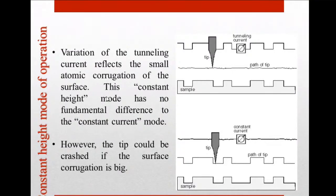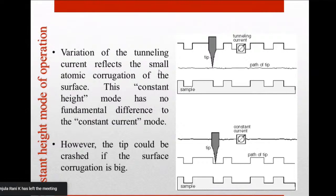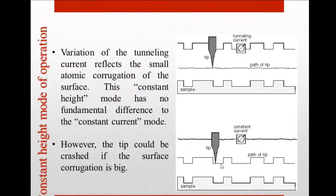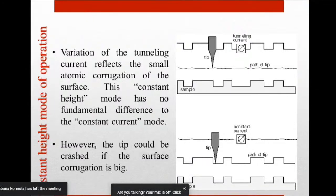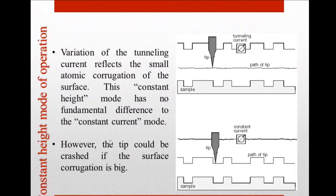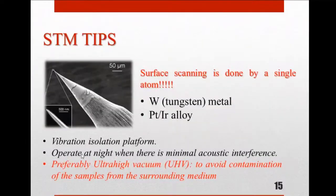In constant height mode, the fundamental principle is similar, but the height between tip and sample surface is kept constant. Instead, variations in the tunneling current are measured to reflect atomic corrugations of the surface. One disadvantage is that if there are large surface irregularities, the tip could crash. Constant current mode is preferred when the surface type is uncertain. Constant height mode can be used only when the surface is known to be very smooth, minimizing the risk of tip crashing.